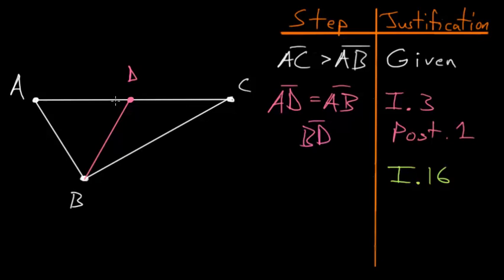So in our case, we're looking at this angle ADB, and this Book 1, Proposition number 16, says that this angle here is bigger than either this angle or this angle here. So let's write that this angle ADB is bigger than the angle ACB.